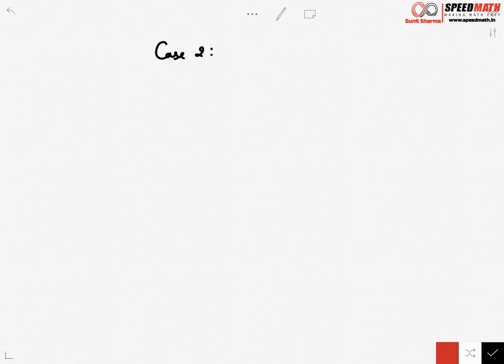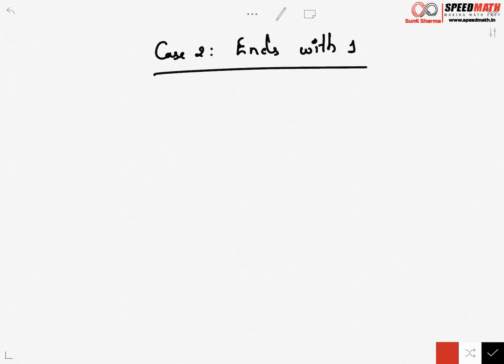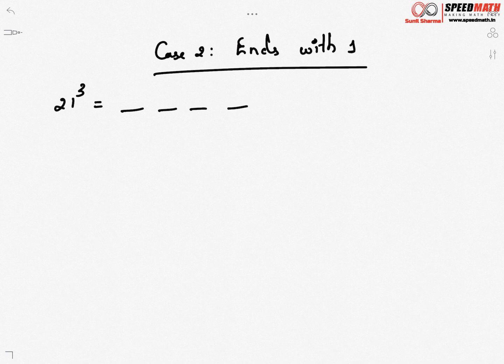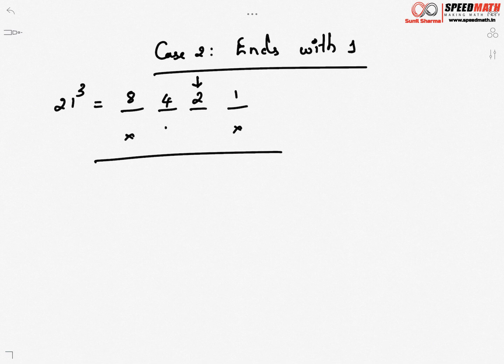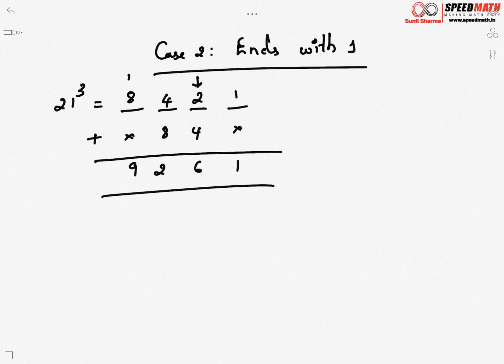Now let's discuss Case 2 — the number ends with 1, i.e., the units place digit is 1. Let's find the cube of 21. Again four positions. This is exactly the reverse of Case 1. Place the last two positions as 2 and 1; in the second position write 2² = 4; and in the first position write 2³ = 8. Step 2: leave first and last, double the middle — 4 doubled is 8, 2 doubled is 4. Add everything: 1 stays, 4 + 2 = 6, 8 + 4 = 12 (write 2, carry 1), 8 + 1 = 9. So 21³ = 9261.